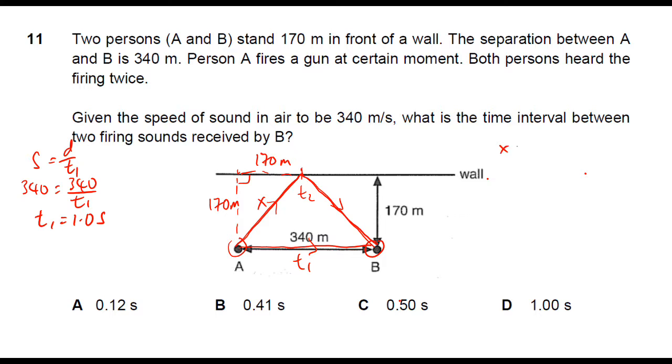So to find X, I will be using Pythagoras theorem: square root of 170 squared plus 170 squared, and I will get 240.4 meters. So the total distance traveled by the second sound is actually 2X. So the distance will be 480.8 meters.